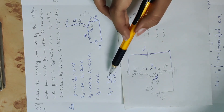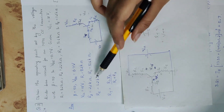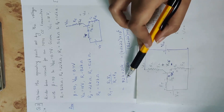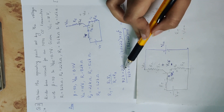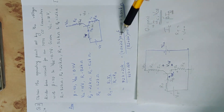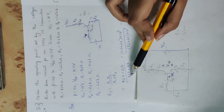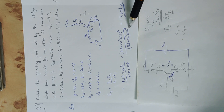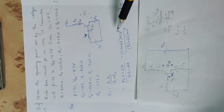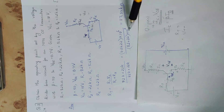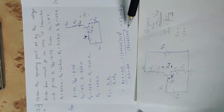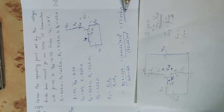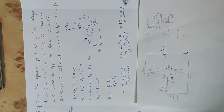Rth is equal to R1 in parallel with R2, which equals R1 into R2 divided by R1 plus R2. Substituting: 82 kilo ohm into 22 kilo ohm divided by 82 kilo ohm plus 22 kilo ohm. That gives Rth equal to 17.35 kilo ohm. This is the Rth value.